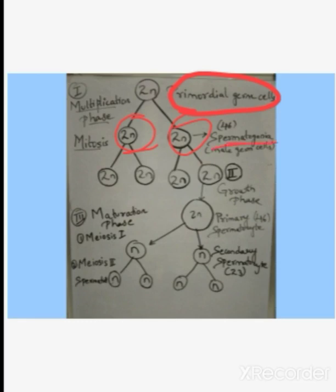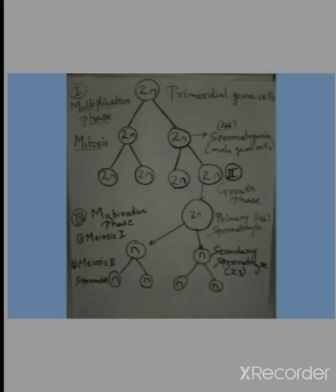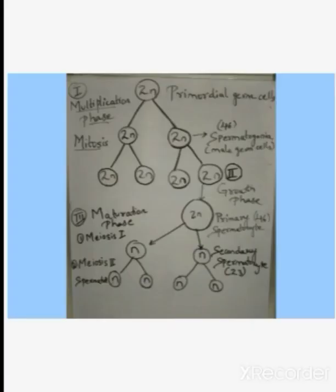Further, through mitosis division, two cells become four cells. The special point is that with each cell cycle phase division, the chromosomal number will be the same, that is 2n, diploid. Four cells are formed, and further they undergo division.